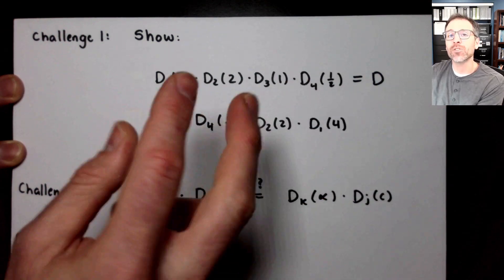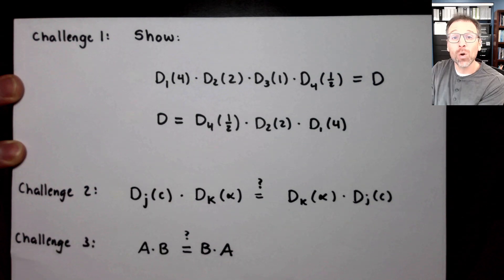In other words, I'm claiming that dilation matrices are commutative. Please show that. That's a challenge for you. Challenge number two is, is it true that all dilation matrices are commutative? Can I switch the order?